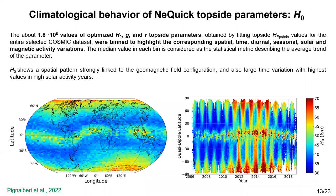A further point raised is that the quasi-dipole latitude description does not account for changes in the magnetic field with time, so the fluctuations could partly be due to that reason. The questioner also asks a technical question about H0: if you have found an optimal H0 better representing reality in the top side, how do you ensure a smooth transition from the bottom side, where H0 is produced by other means, to the top side H0 found from experimental data?